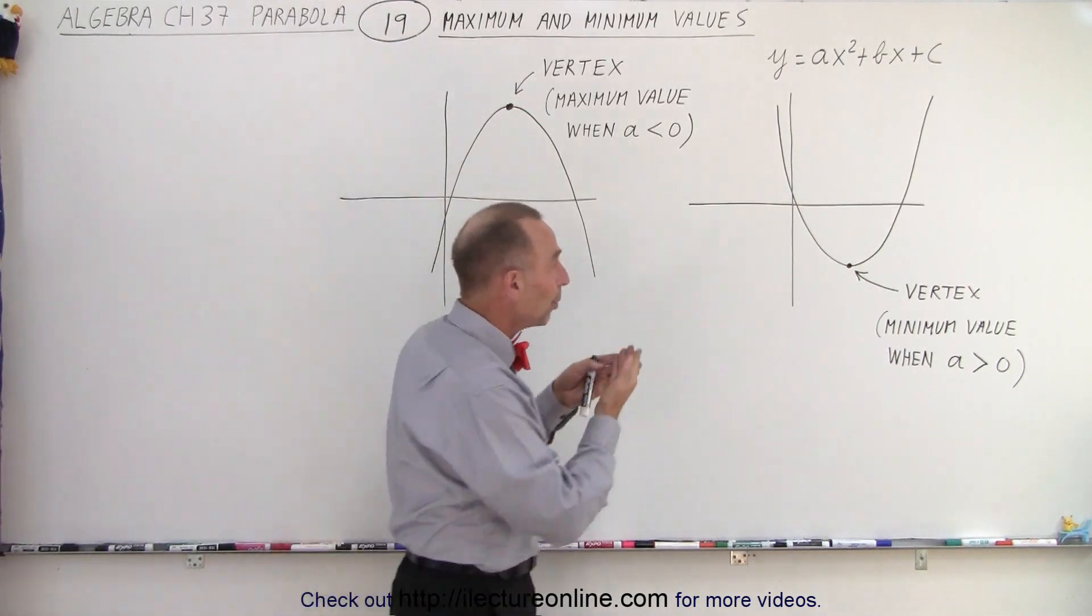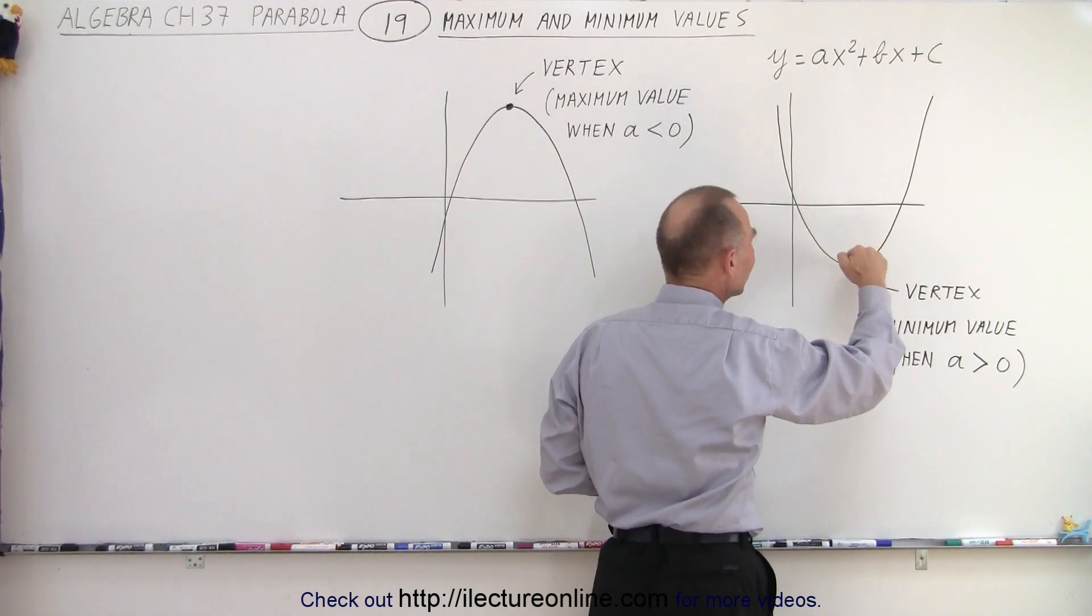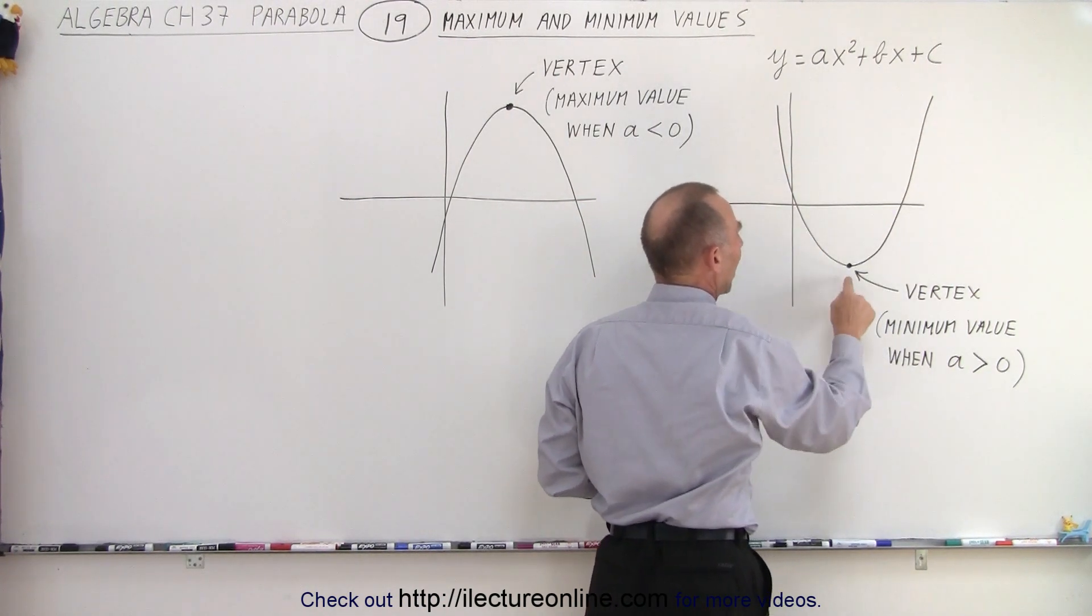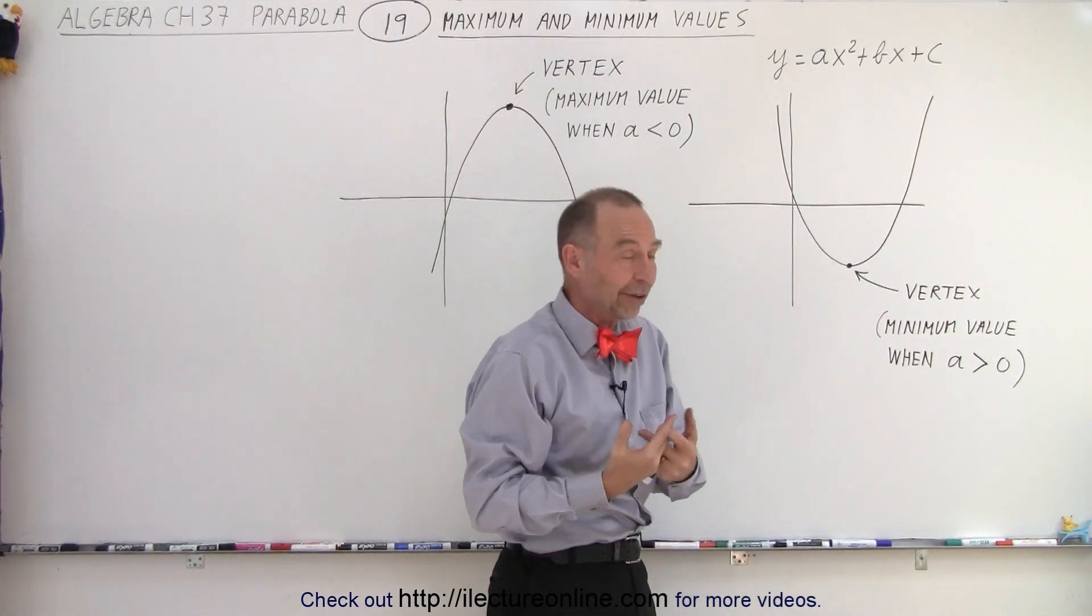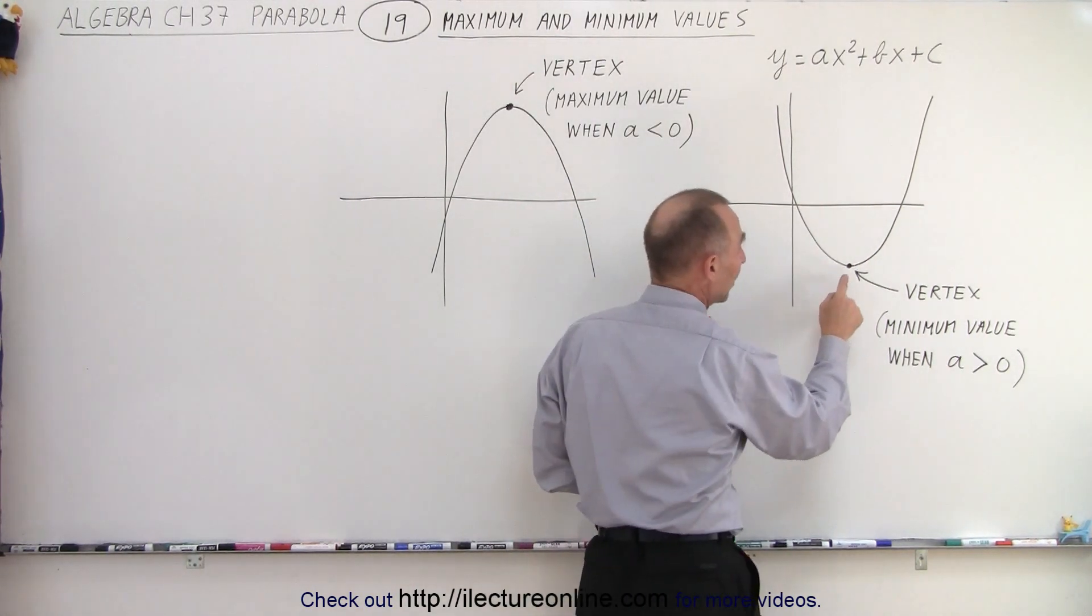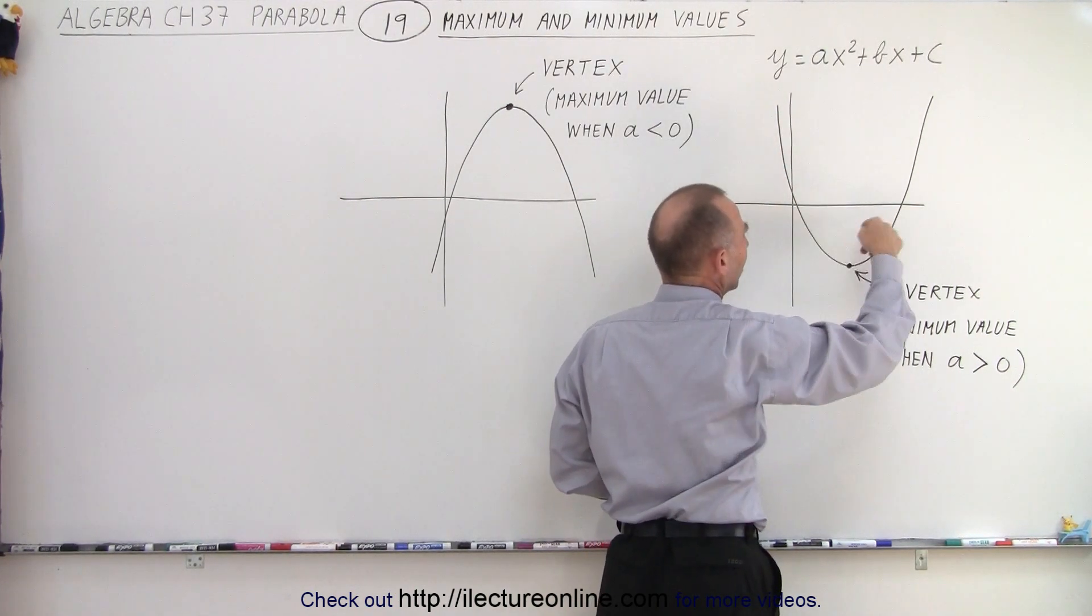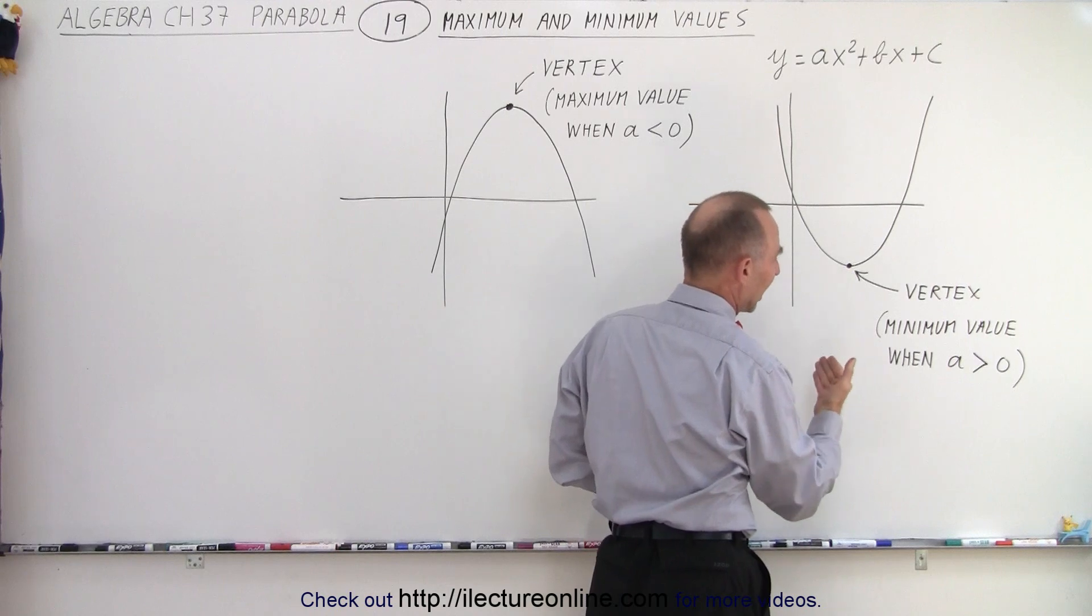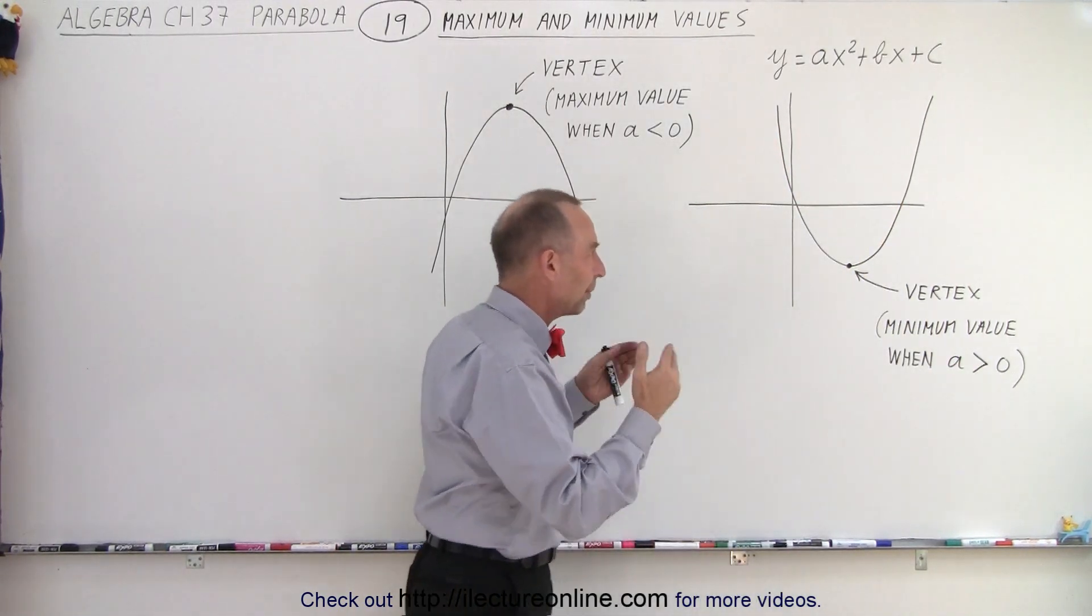If the parabola opens upward, then there's a point on the graph that is the lowest value of any other point on the graph. And of course, that point is the vertex of the parabola, and we already know how to find the vertex. This becomes the minimum value of the function that's represented by this graph. And again, that's the case where a is positive, meaning the parabola opens upward.